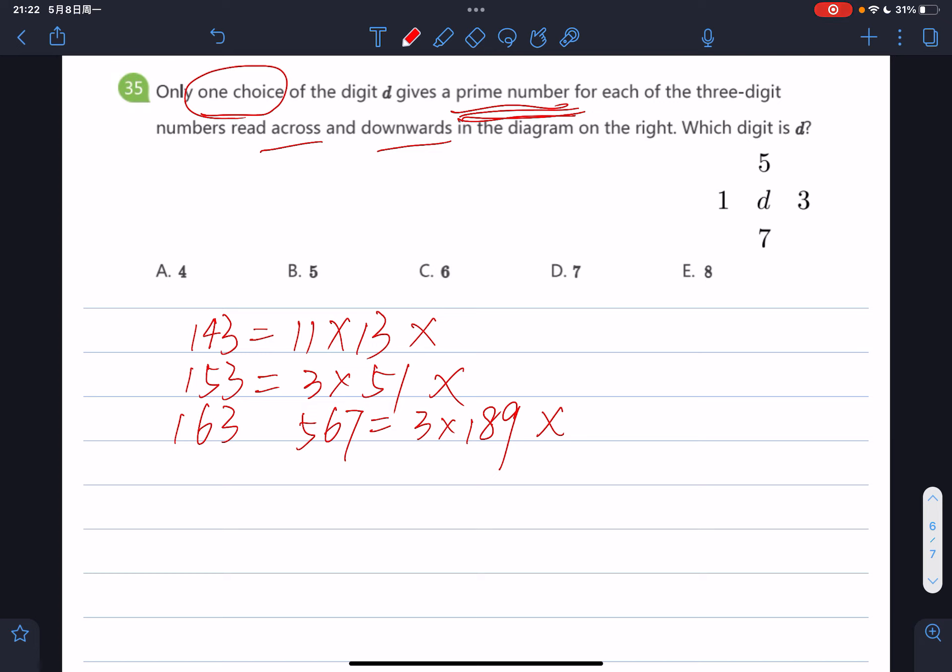And you may find that D is correct. 577 and 173 are both prime numbers. And let's look at E8.